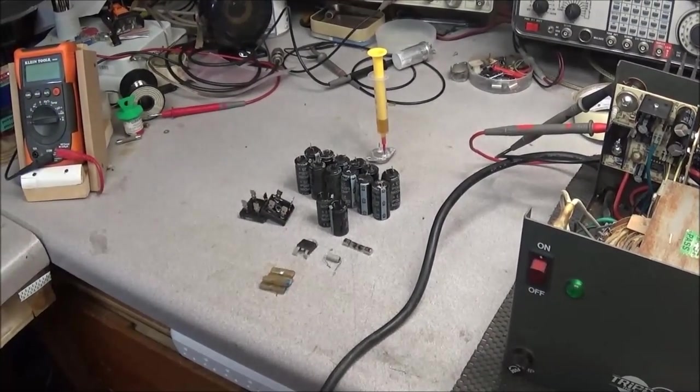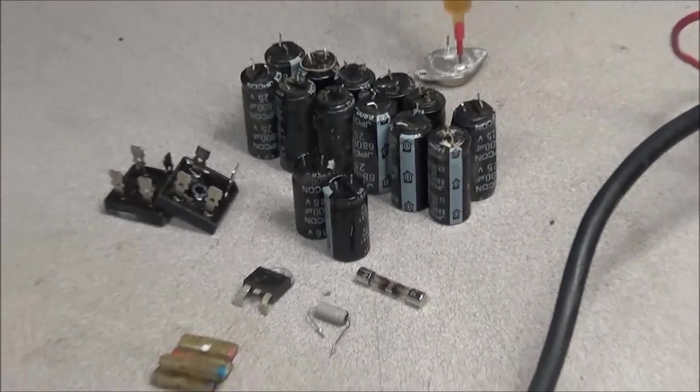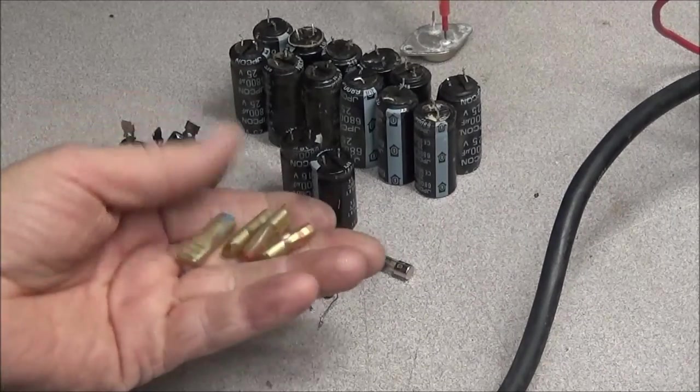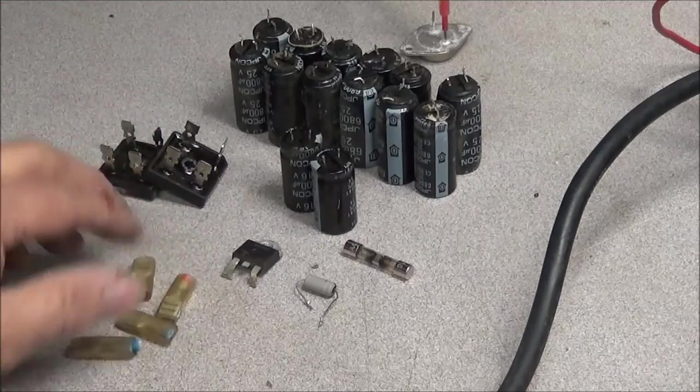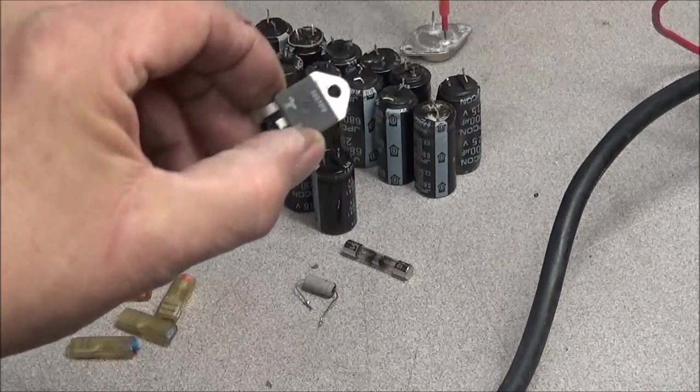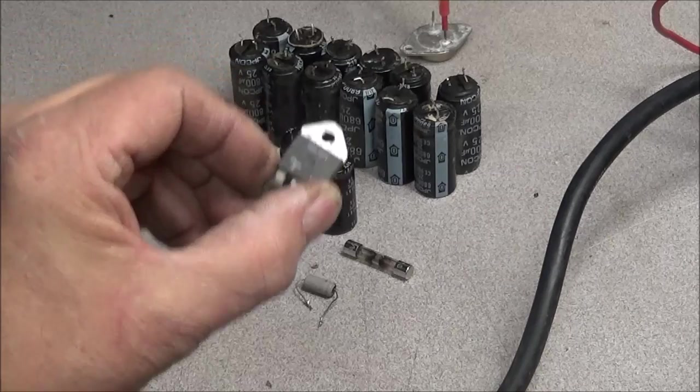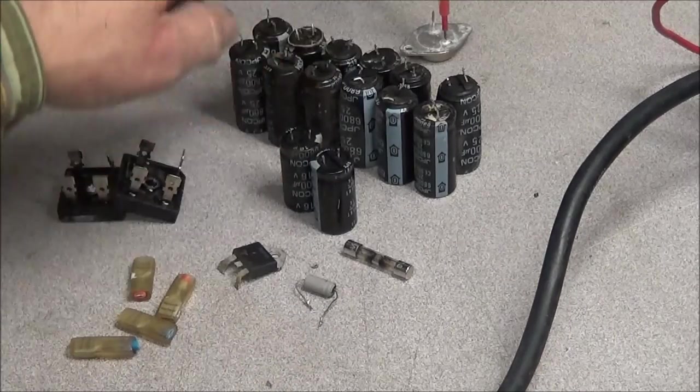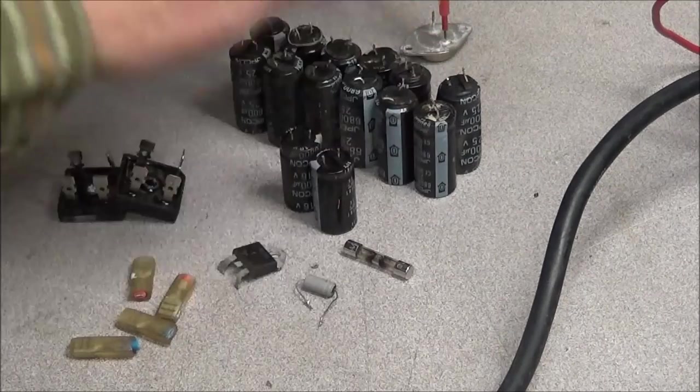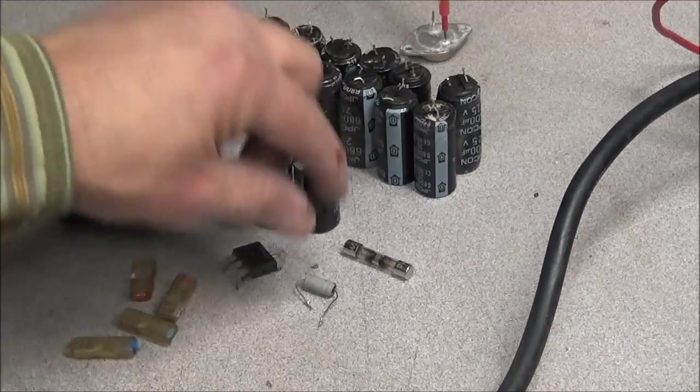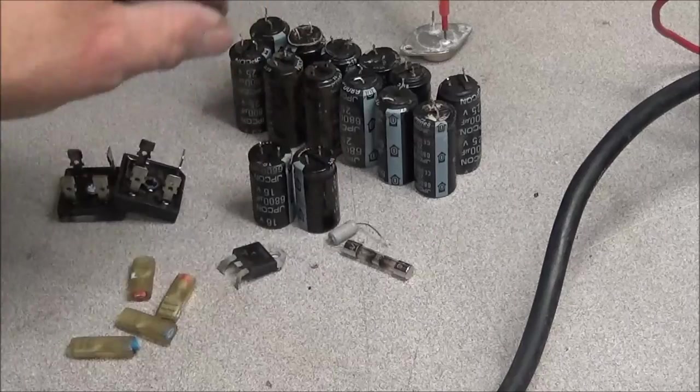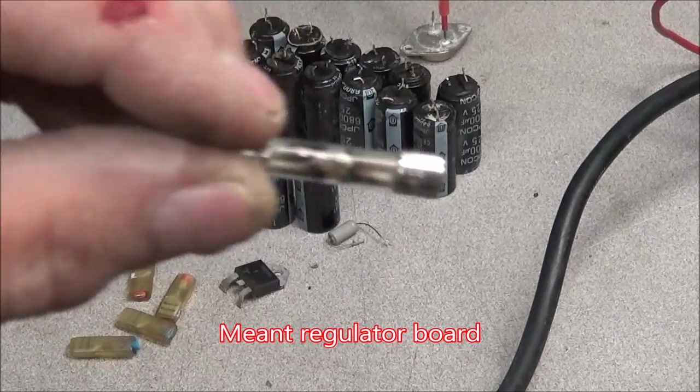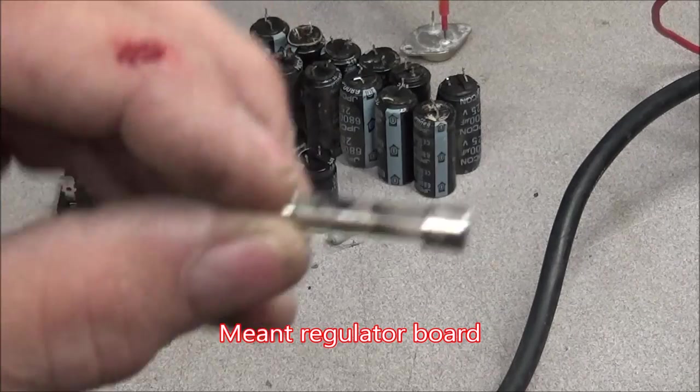So you can see there's all the bad parts that was in it. These were the spade connectors. The SCR was also bad - it's completely shorted. The incorrect parts that were removed and all the filter board capacitors plus the capacitors that were on the rectifier board. And that was a fuse that was laying inside of it - you can see it was toasted.